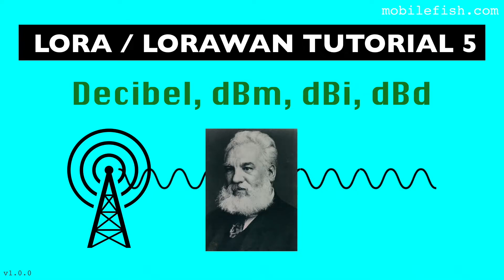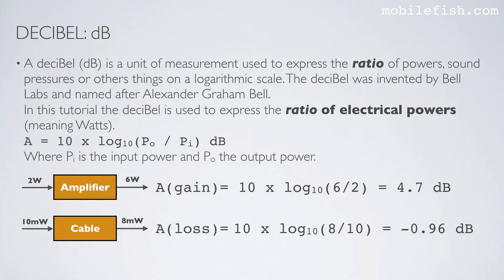In this tutorial I will explain what the decibel is and what the purposes are of the units dBm, dBi and dBd. A decibel is a unit of measurement used to express the ratio of powers, sound pressures or other things on a logarithmic scale. The decibel was invented by Bell Labs and named after Alexander Graham Bell. In this tutorial the decibel is used to express the ratio of electrical powers, meaning watts.